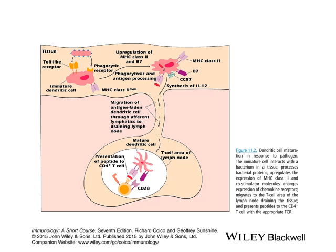Two important molecules are also presented on the antigen presenting cell. One is B7, which needs to talk to CD28. The other is CCR7 — a chemokine receptor. The idea is that when there is injury somewhere, chemokines are released to attract the cells needed in that place. We need chemokine receptors for homing. Once the dendritic cell becomes mature, the very first thing it does is leave the skin and migrate through afferent lymphatics to the draining lymph node.